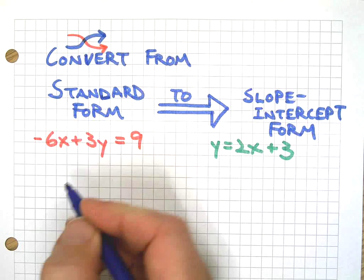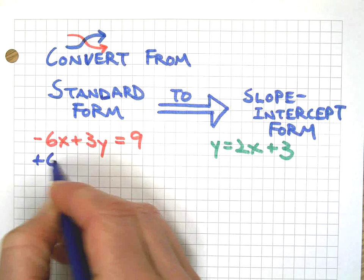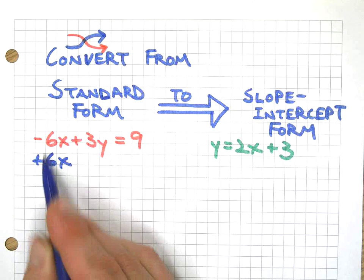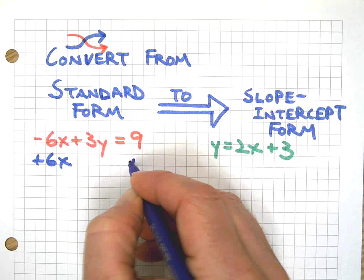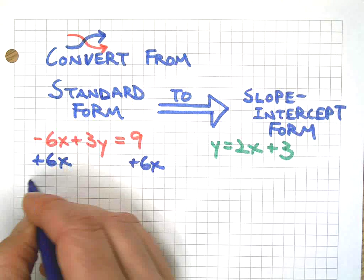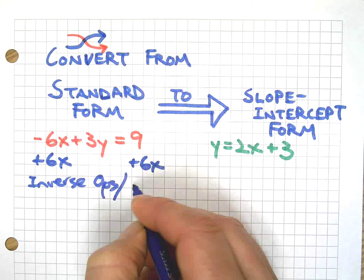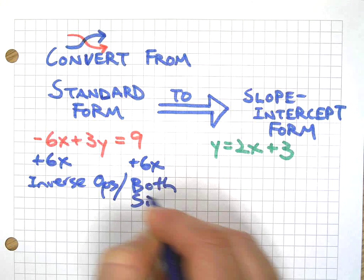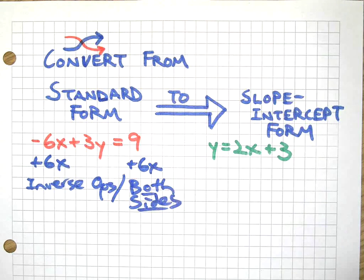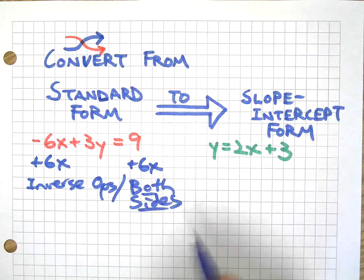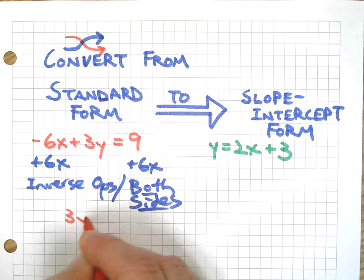We do this by using inverse operations, right? To make that a zero, I need to add the opposite, inverse operations. And I'm also going to add that to both sides. So inverse ops both sides. That's going to keep my equation balanced by doing it to both sides.